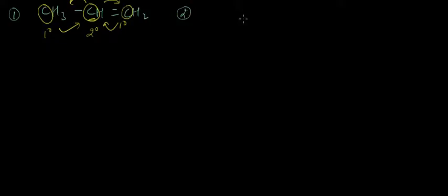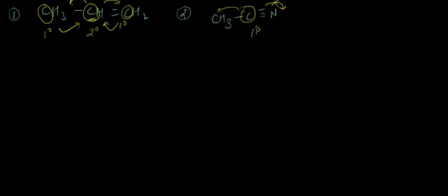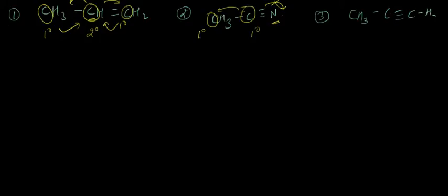The second example: the degree of this carbon atom is one because the number of carbons directly attached to it is only one. Remember this is a nitrogen atom, not a carbon, so if you thought it was two degree you are wrong. Similarly the degree for this carbon atom is one. The third example is CH3-C≡CH: the degree for this carbon atom is one, this degree is two, and this degree is one.